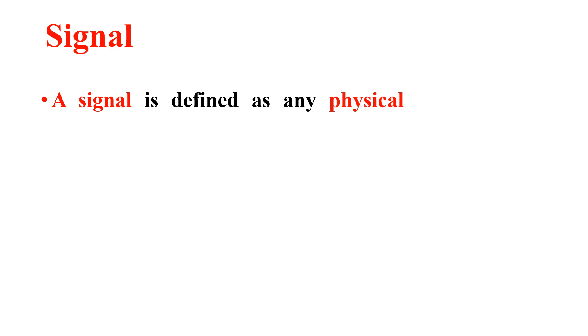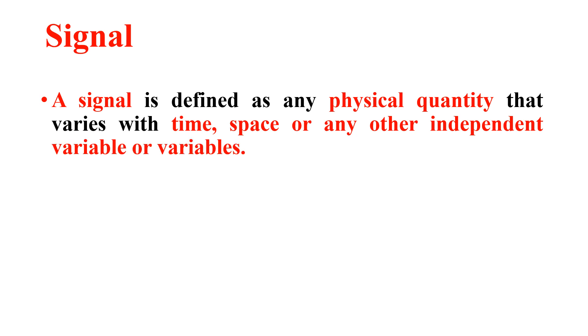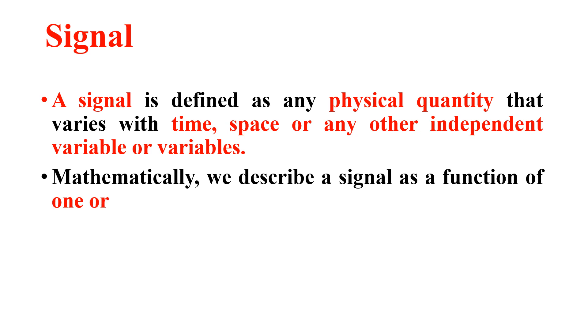First, let me consider the definition of signal. A signal is defined as any physical quantity that varies with time, space, or any other independent variable or variables. It has to vary with respect to an independent variable. Mathematically, we describe a signal as a function of one or more independent variables.